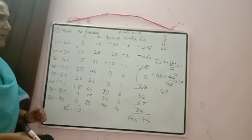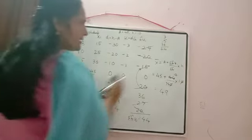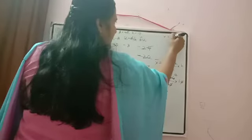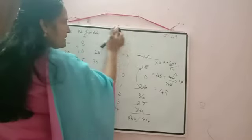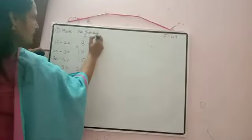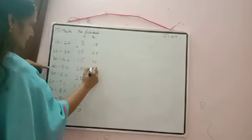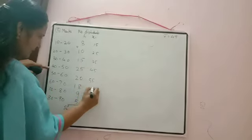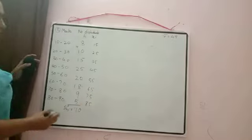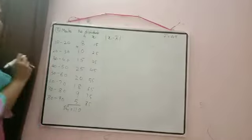Now calculate mean deviation. x̄ = 49. We need xᵢ and fᵢ. The class marks xᵢ are: 15, 25, 35, 45, 55, 65, 75, 85. Compute |xᵢ − x̄|: |15−49|=34, |25−49|=24, |35−49|=14, |45−49|=4, |55−49|=6, |65−49|=16, |75−49|=26, |85−49|=36.